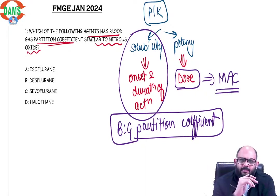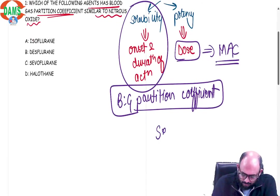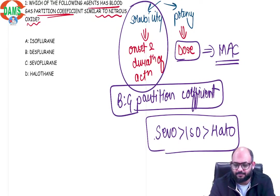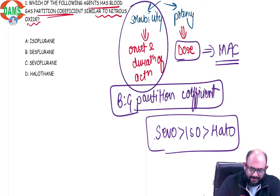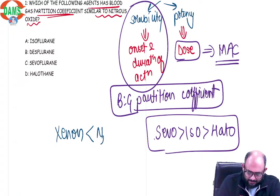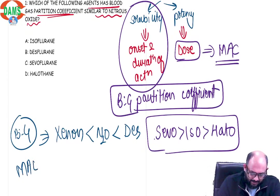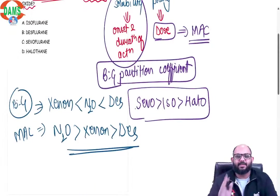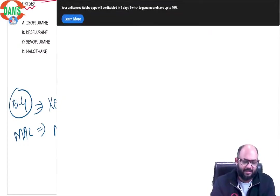I have given you an order. In that order, CO, ISO, and HALO always follow the same order: CO is less soluble than ISO, which is less soluble than HALO, and CO is less potent than ISO, which is less potent than HALO. The rest of the things change between nitrous, xenon, and des. Xenon is fastest — least blood gas partition coefficient — followed by nitrous, followed by desflurane. In MAC, nitrous has the highest MAC, followed by xenon, followed by des. Give five minutes of your time to this table and you will get a question from it and solve it very easily.